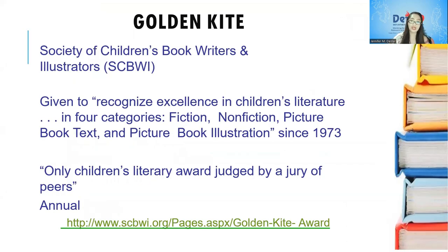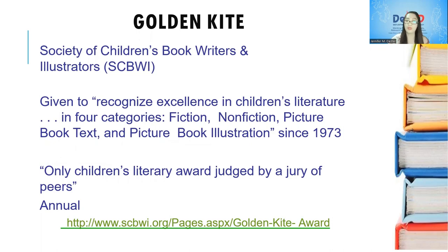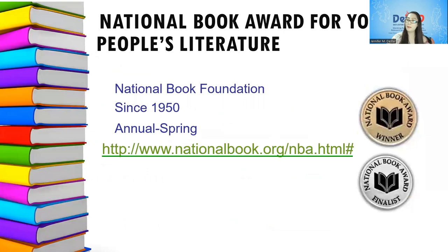We also have the Golden Kite Award, given by the Society of Children's Book Writers and Illustrators, to recognize excellence in children's literature in four categories: fiction, non-fiction, picture book text, and picture book illustration since 1973. It is the only children's literary award judged by a jury of peers and is given annually. Next, the National Book Award for Young People's Literature, given by the National Book Foundation since 1950, awarded every spring annually.